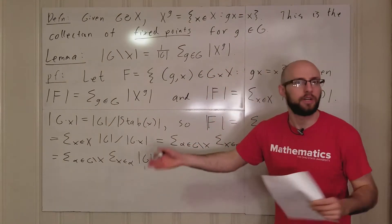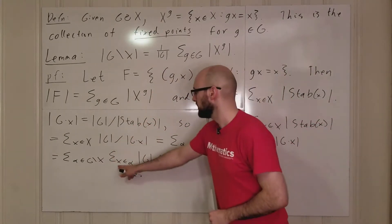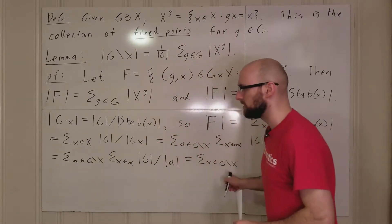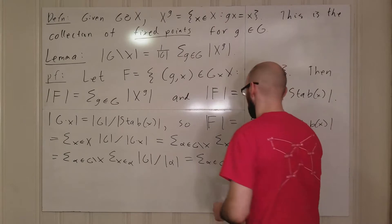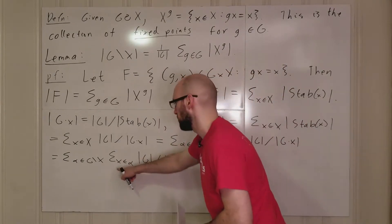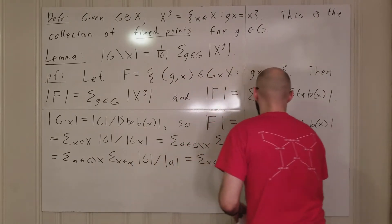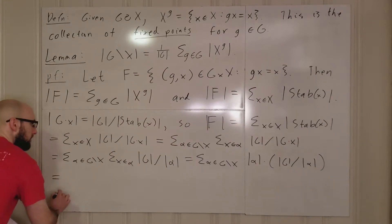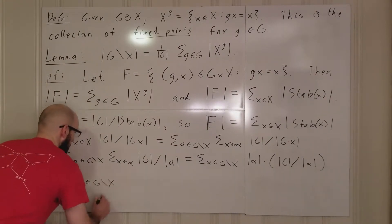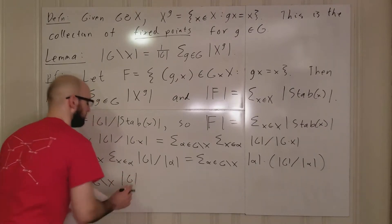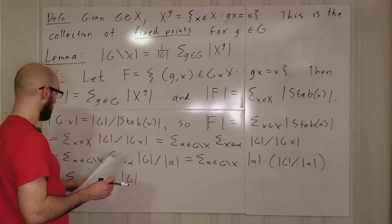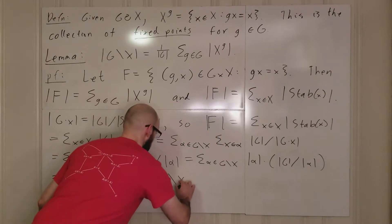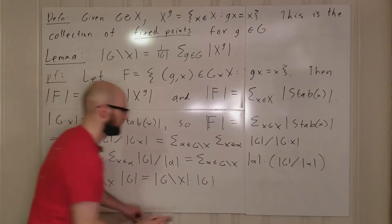How many x's are in α? That's just |α|. And for every x in α, the expression |G|/|α| doesn't depend on x, so we can multiply: |α| times |G|/|α| = |G|. So the whole sum becomes the sum over all α in the G-orbits of X of |G|.